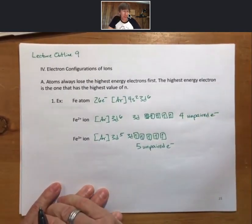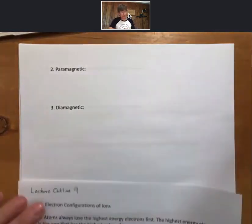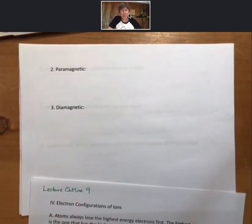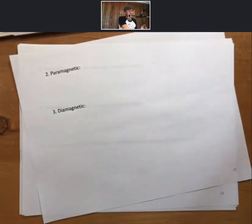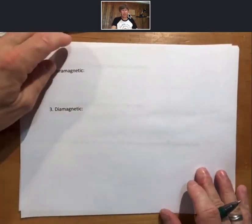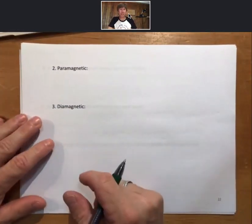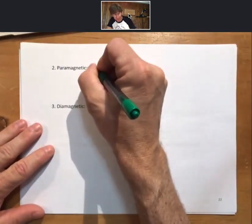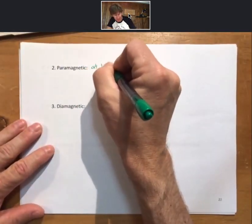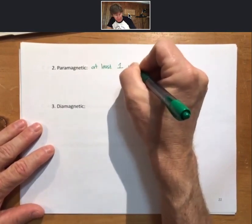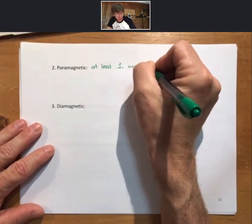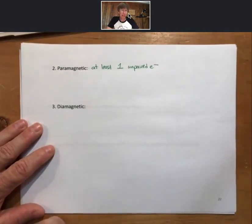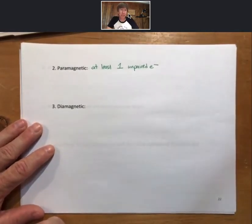It's a lot of unpaired electrons. I want to define two new terms, paramagnetic and diamagnetic. For paramagnetic, a substance is a paramagnetic substance if it has at least one unpaired electron.